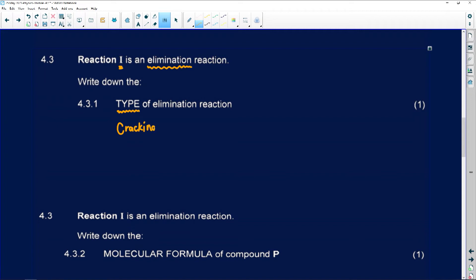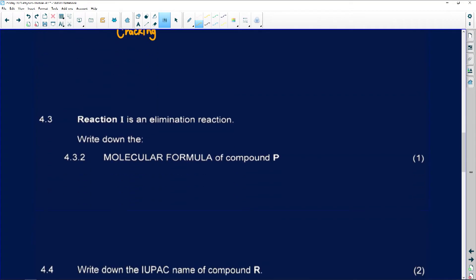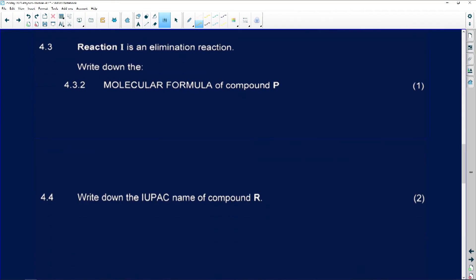Cracking is actually another type of elimination reaction. I know most of the time we use where we're removing water, dehydrohalogenation and so forth. But cracking is also another type of elimination reaction. Now 4.3.2 says we must write down the molecular formula of compound P. We would have had C8 and then H18.